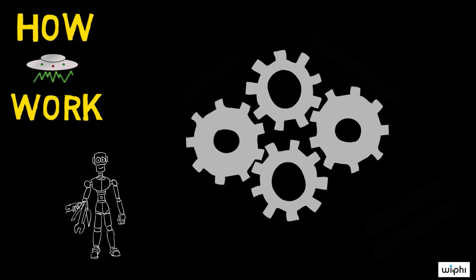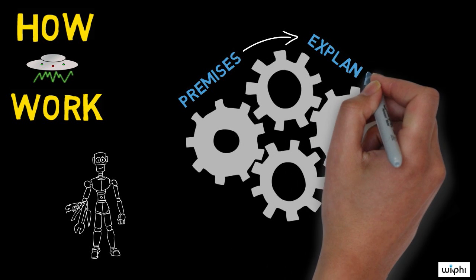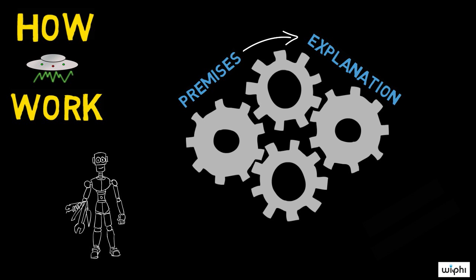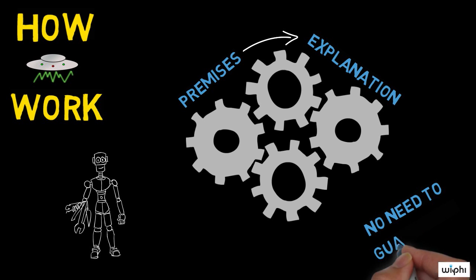We know that some stuff is true, these are the premises, and reason from that to whatever is the best answer to the question, why are these things true? Our knowledge doesn't guarantee that the explanation is correct, but that's okay because abductive arguments aren't supposed to be deductively valid.